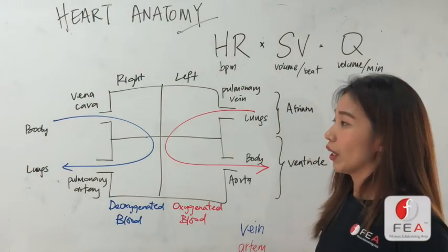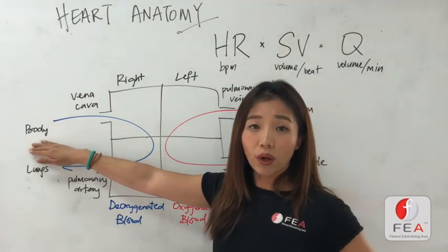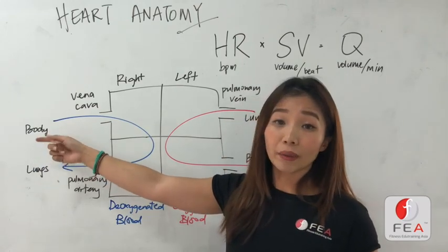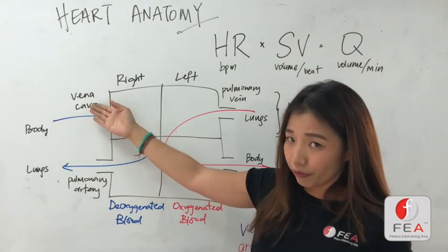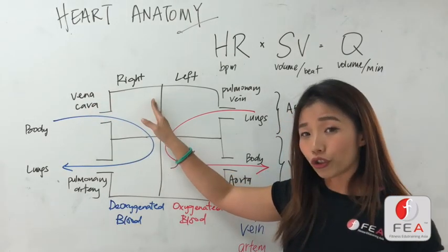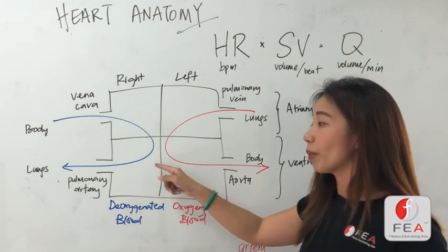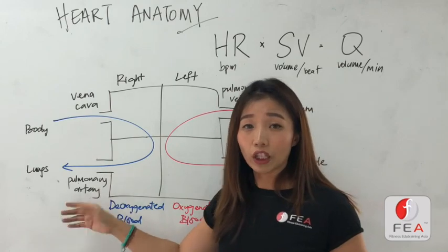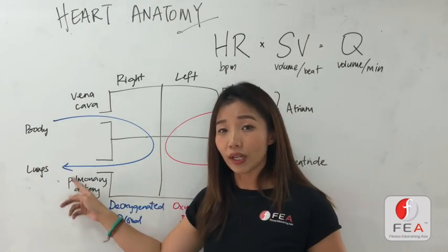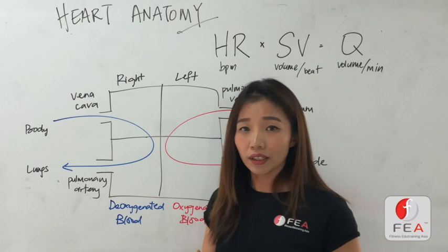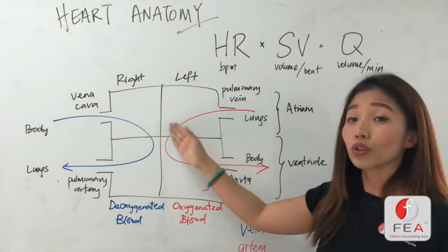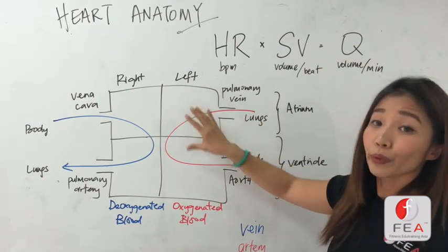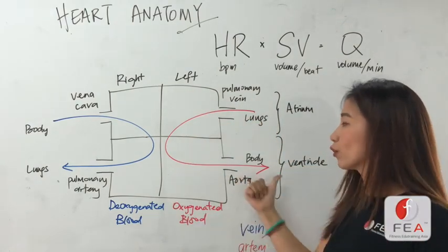So what you can see here is that from our body cells, once the body cells take up all the oxygen from the blood, they will actually be transported back to the heart through the vena cava, which is a vein. It goes into the right atrium, then to the right ventricle, and it's being pumped out through the pulmonary artery. So with this deoxygenated blood, your heart will pump it to your lungs, because that is where it's going to get the oxygen. And once it gets the oxygen, it's going to go back into the heart through the pulmonary veins, into the left atrium, to the left ventricle, and out from the aorta.